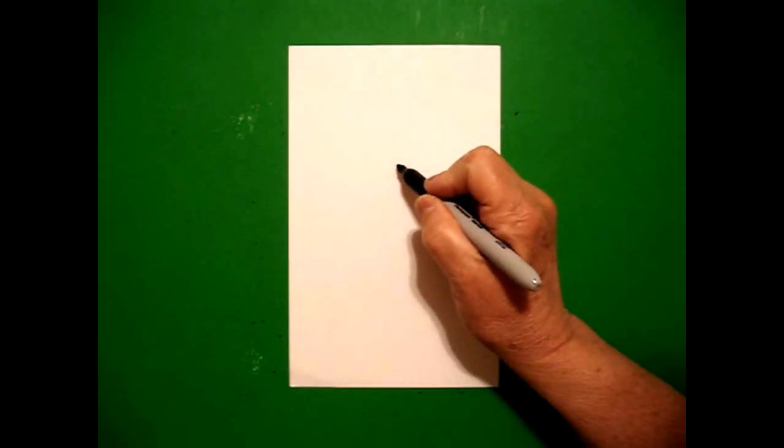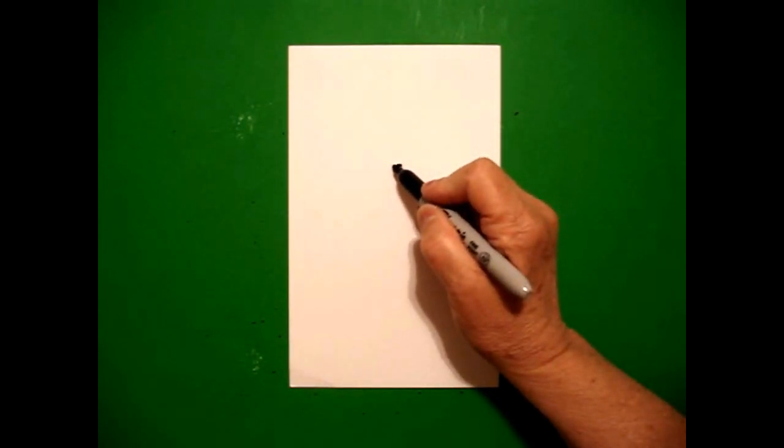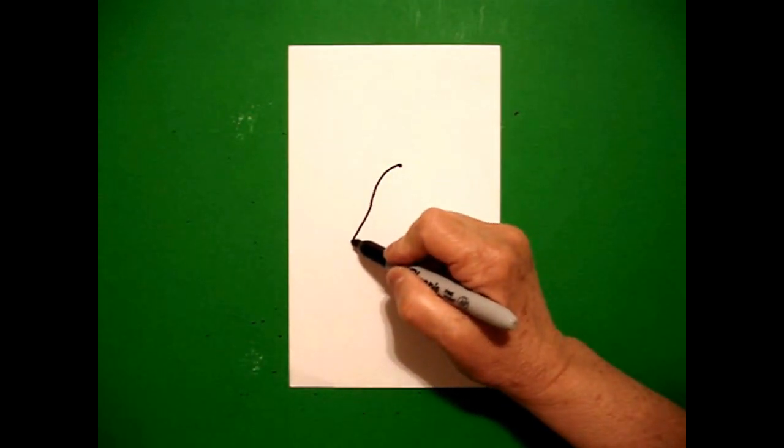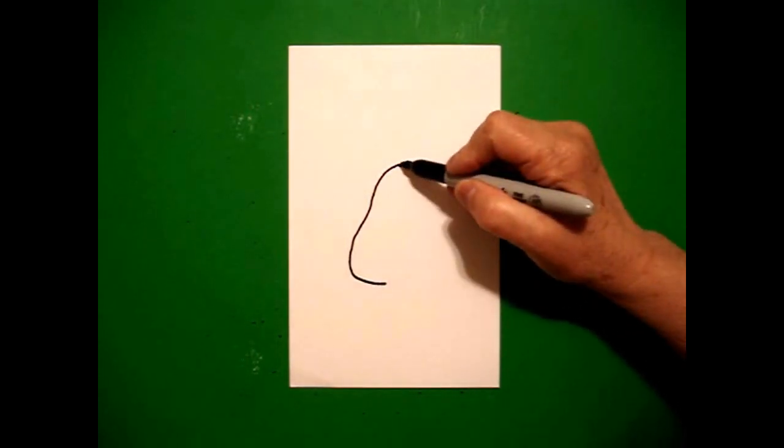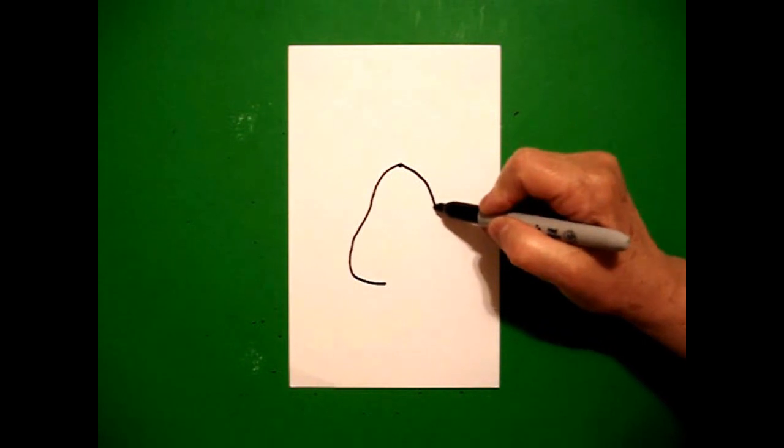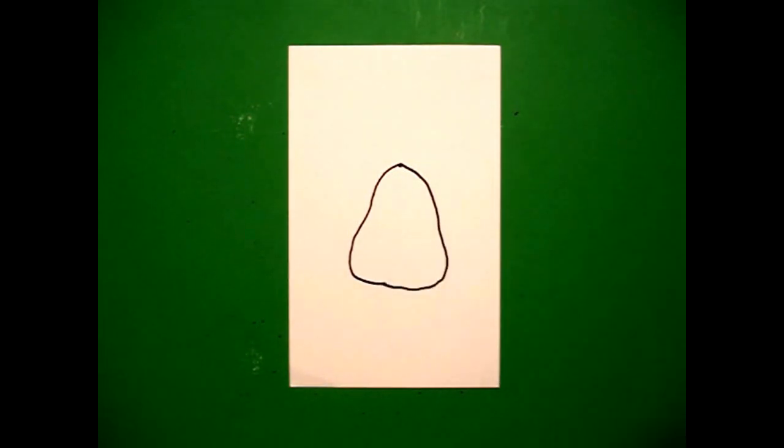Today's project is How to Draw Chicken Little. I'm going to come right about here in the middle of my paper and draw a dot. And from that dot going down, I'm going to draw a curved line down and in. Come back to the dot. I'm going to draw a curved line down and connect.